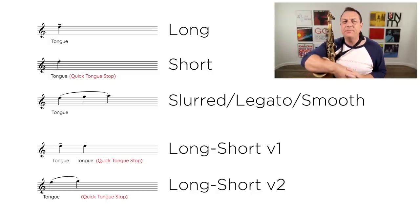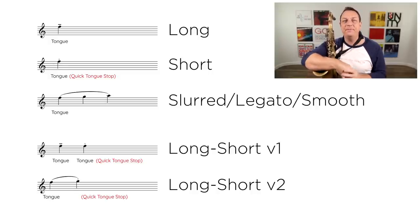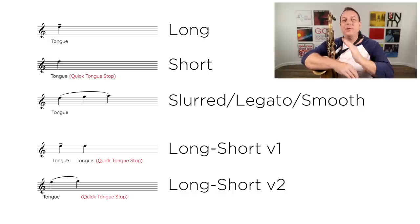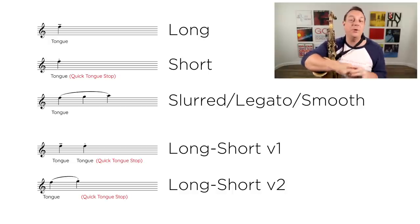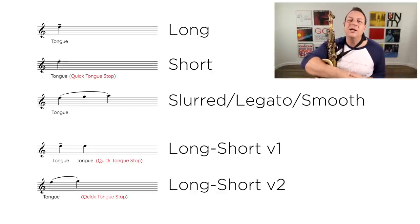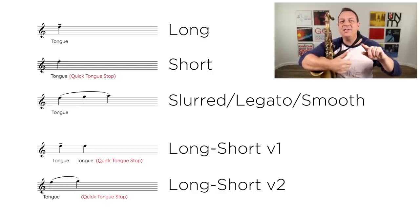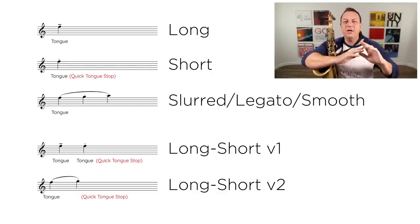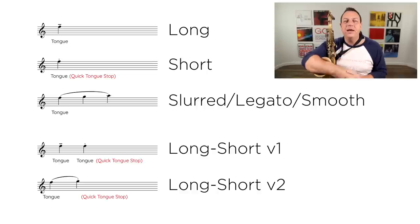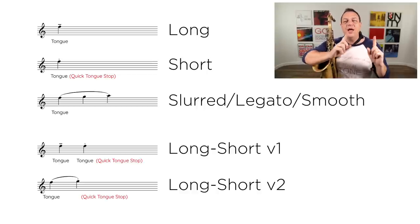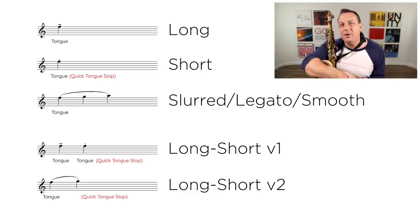With those simple rules — make a note long or short, slur it, or if you've got a long short, either tongue both or tongue the first one and just make the second one short — with those simple rules you can play any song: jazz, pop, soul, funk, you name it, and you can make it sound really good. So let's have a little demonstration of these basic principles.